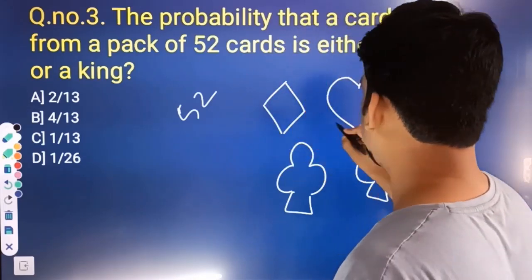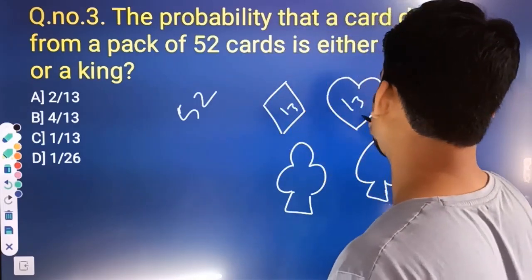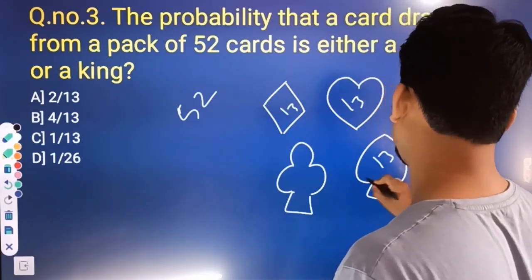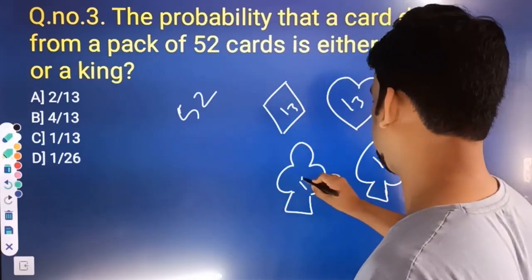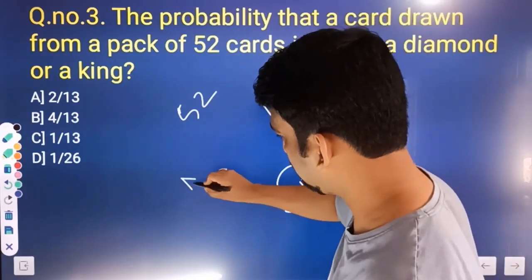There are 13 cards in each suit — 13, and there is a special card, the king.